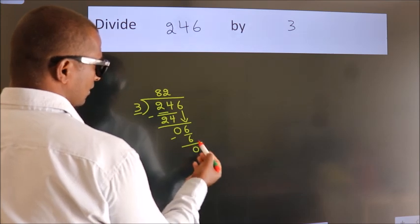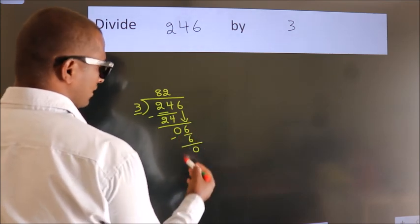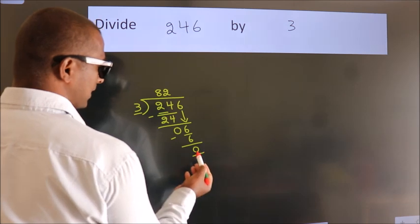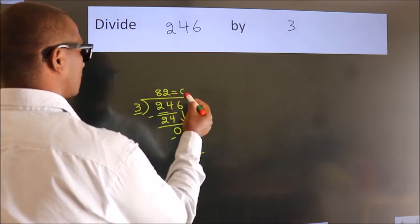After this, no more numbers to bring it down. And we got remainder 0. So this is our quotient.